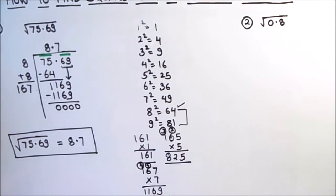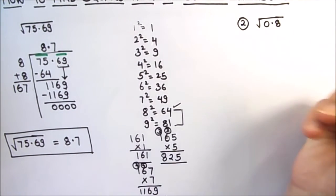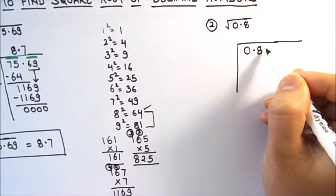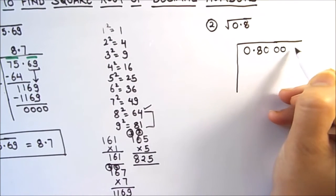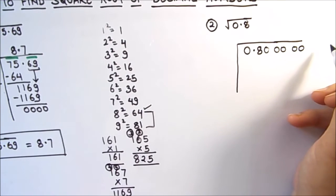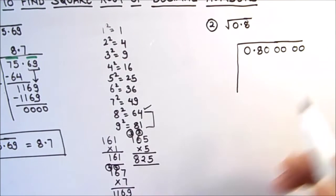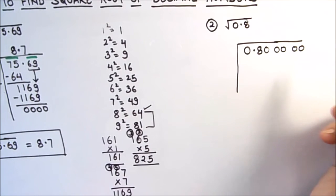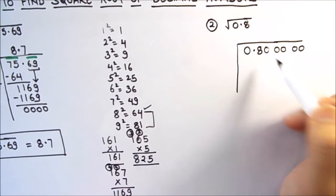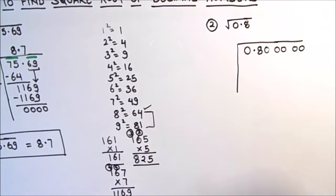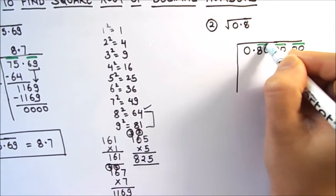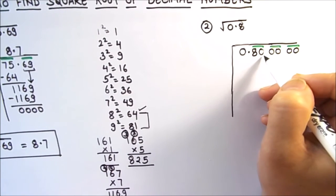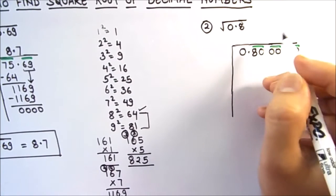Now let's move on to our next example: finding the square root of 0.8. Since our number is a single digit decimal, we write it as 0.80 followed by additional pairs of zeros to find the square root up to two or more decimal places. Adding zeros does not change the value of the number. We mark groups starting from the units digit: the first group is 80.